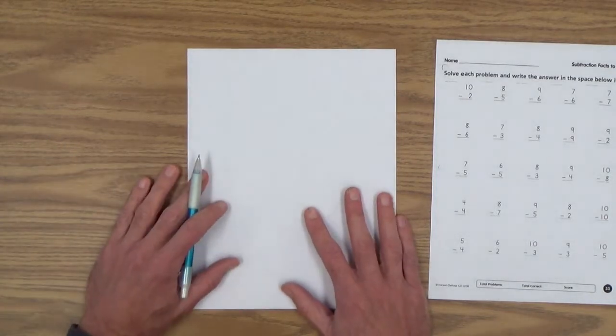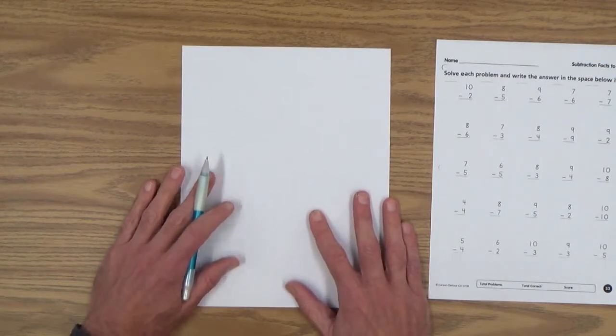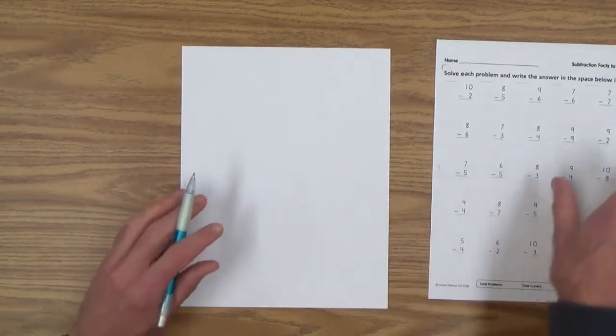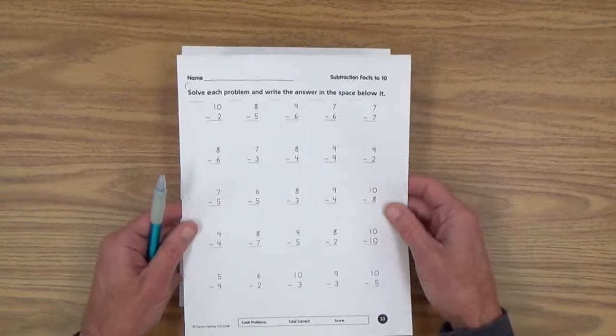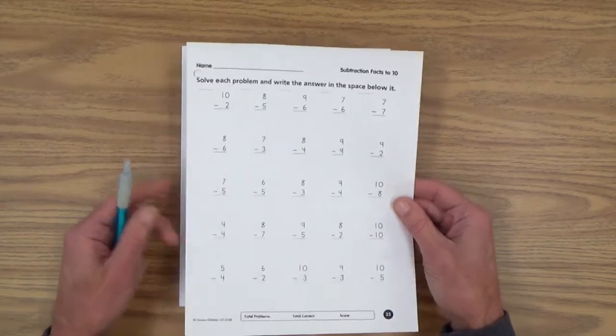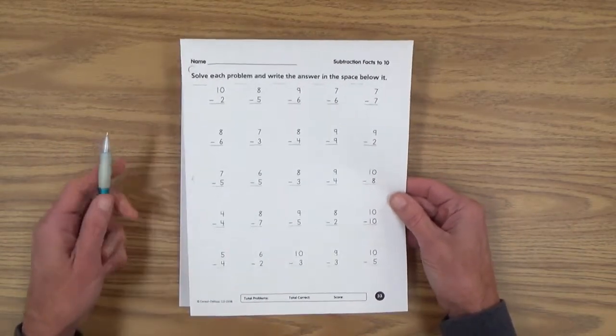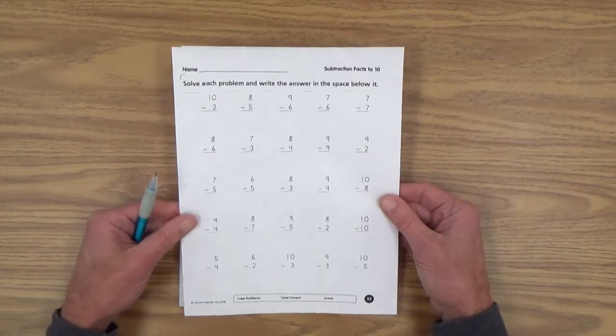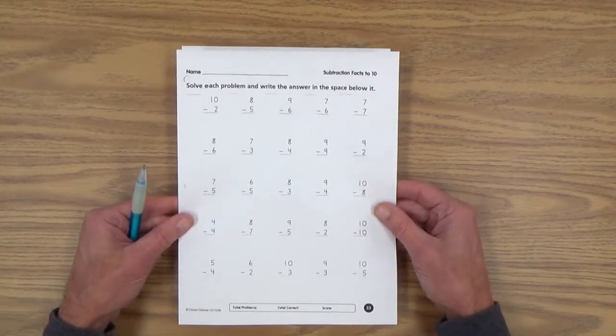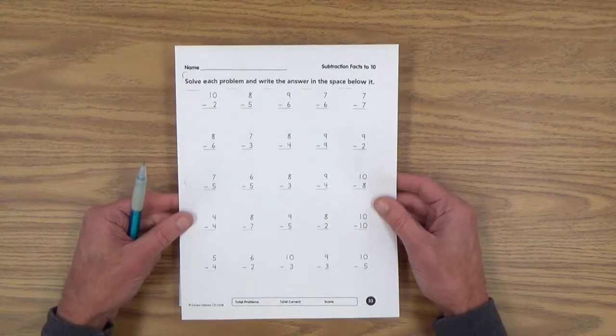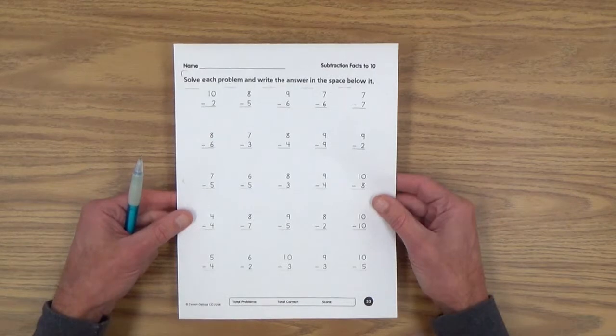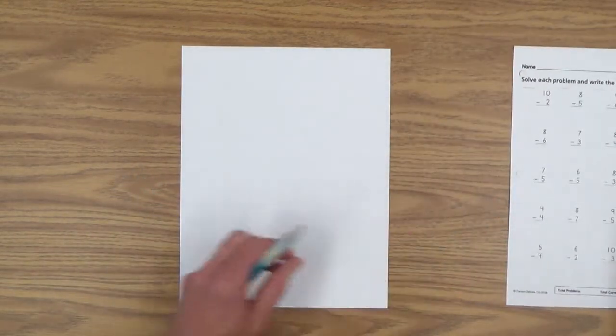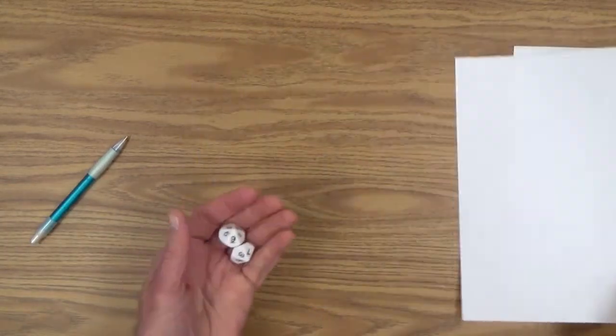Subtraction facts to ten. This sheet is one of two practice sheets that we'll be using in conjunction with this lesson. You can access these by going to Lesson 34 in theearlygiftedmanual.com.